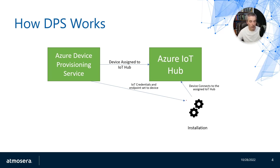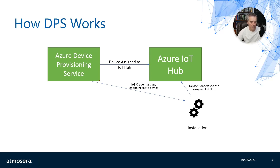The Device Provisioning Service itself is out of the way at that point. But if a device ever needed to re-register — basically a factory reset or something like that — you could just repeat the process. Or if you remove the device or revoke its credentials, it needs to repeat that process again. You just submit a request to the Device Provisioning Service, it registers the device with an IoT hub, sends the credentials from the IoT hub back down to the device, and the device connects back to that IoT hub.